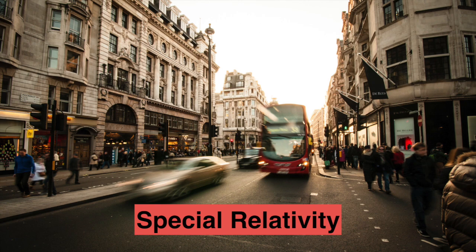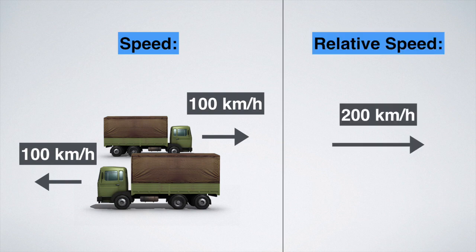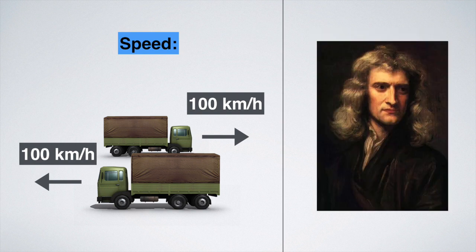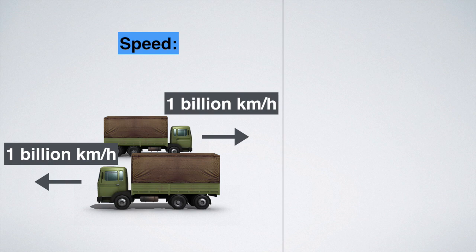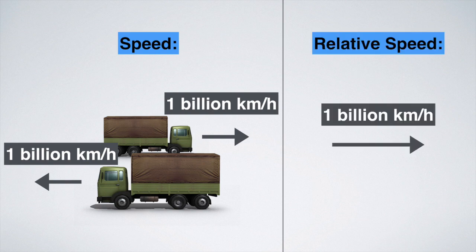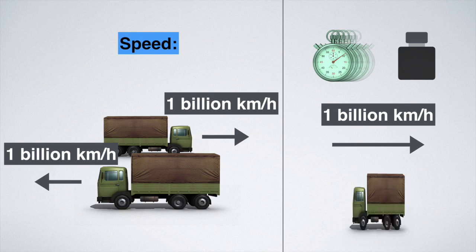For everyday speeds, special relativity is not relevant. Two cars that pass each other with a speed of 100 kilometers per hour in opposite directions will have a relative speed of 200 kilometers per hour. They won't change mass, they won't be shorter and their clocks will run at the same speeds. Newton gets the job done. But as the cars move faster, their relative speed will diverge from the sum of their respective speeds and, accordingly, as they observe each other, they see each other's clocks running slower, each other's mass increasing and each other's lengths contracting.